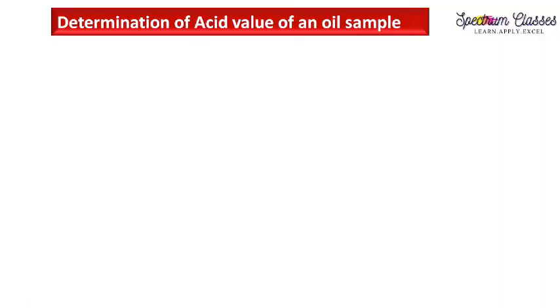Hello everyone, welcome back to Spectrum Classes. This is another lab activity video, and in this video we are going to perform an experiment. The aim of the experiment is determination of acid value of an oil. In my previous video I already performed an experiment on saponification value of an oil sample. Here we are going to discuss the difference between acid value and saponification value, how these are reported, and how we perform this experiment.